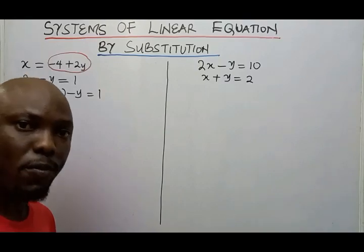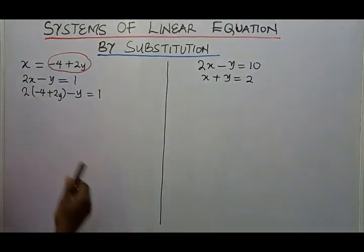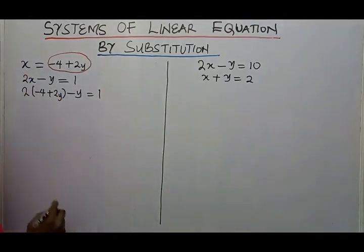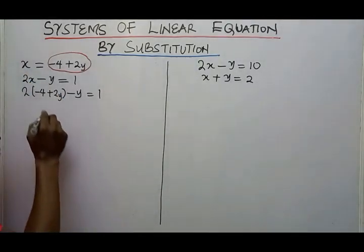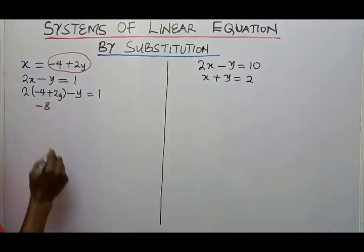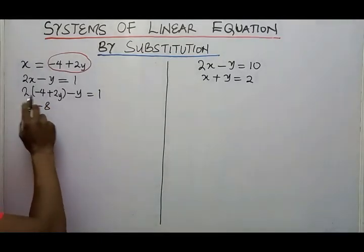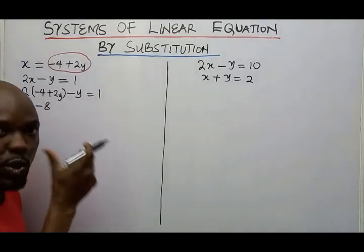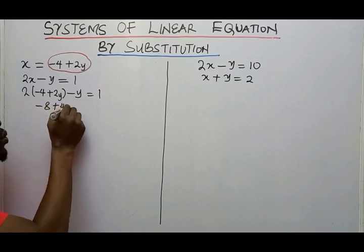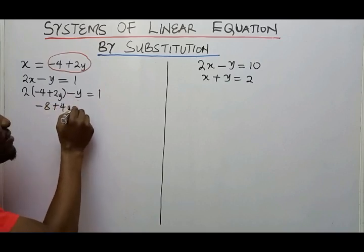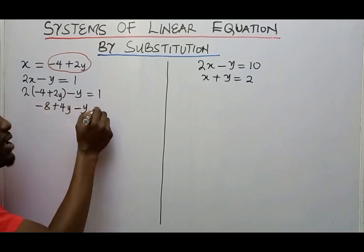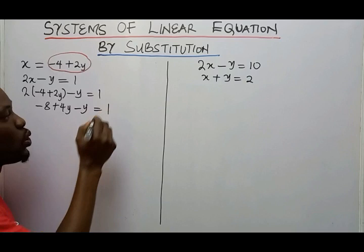Now the next thing we need to do is open up the bracket. If we open up the brackets, 2 times minus 4 gives us minus 8, and 2 times plus 2Y gives us plus 4Y. Then we have minus Y here, equal to 1.